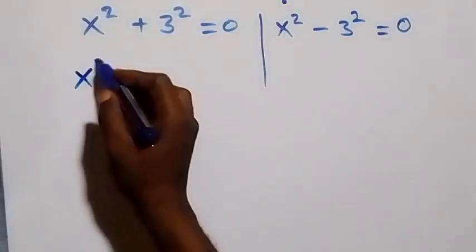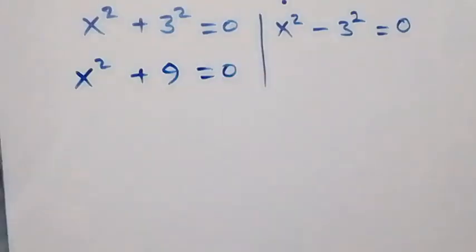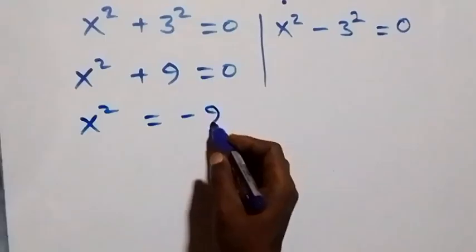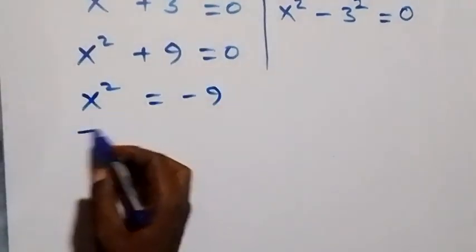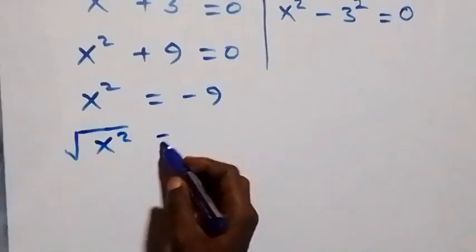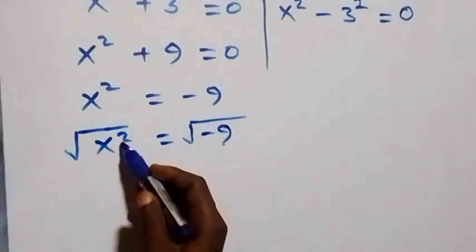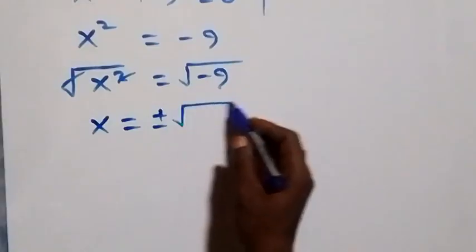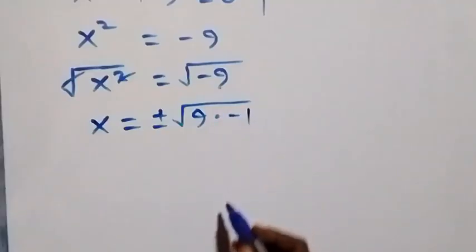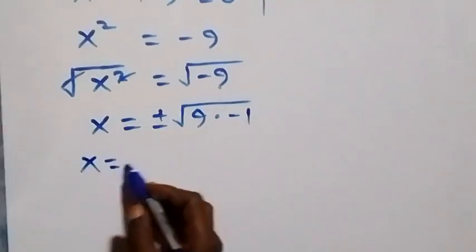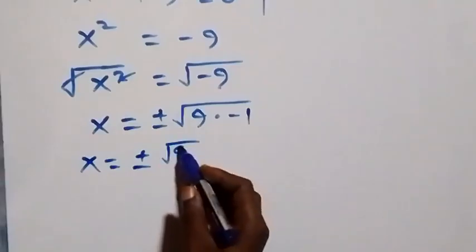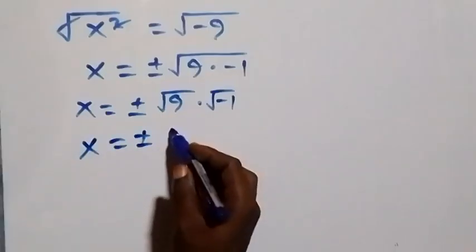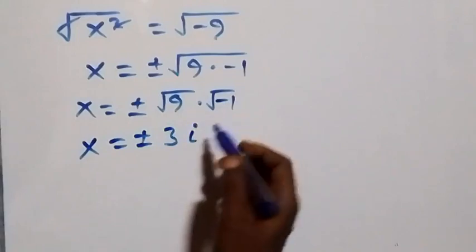Solving the first case: x squared plus three squared — three times three is nine — equals zero. Taking plus nine to this side it becomes minus, so x squared equals minus nine. Taking the square root on both sides: square root of x squared equals square root of minus nine, so x equals plus or minus the square root of nine times minus one, which is plus or minus square root of nine times square root of minus one. Root nine is three, and root minus one is i, which is a complex number.